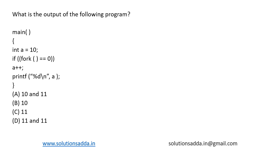This is a question from operating system. What is the output of the following program? We have an integer variable a equal to 10 and if fork equal to equal to 0, we are comparing fork with 0. If it is successful, then we have a++, then we have print a.